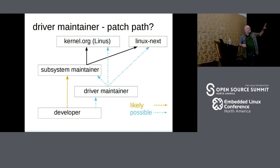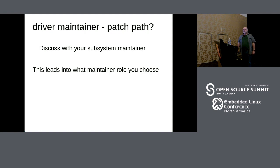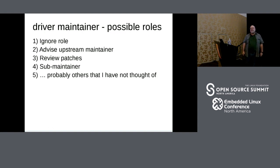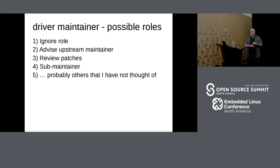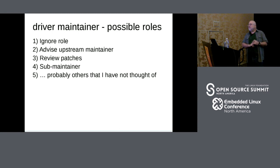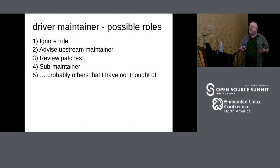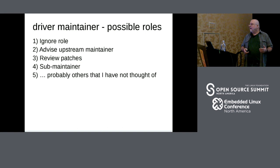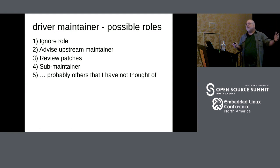About half of my talk is going to be about those possible interactions. You should work with your subsystem maintainer to make sure you're on common ground about what role you're going to be taking. There are five different possible roles you can take: first, totally ignore your role; second, provide advice to your upstream maintainer; third, directly review patches; fourth, actually become a sub-maintainer; and there are probably other roles as well.